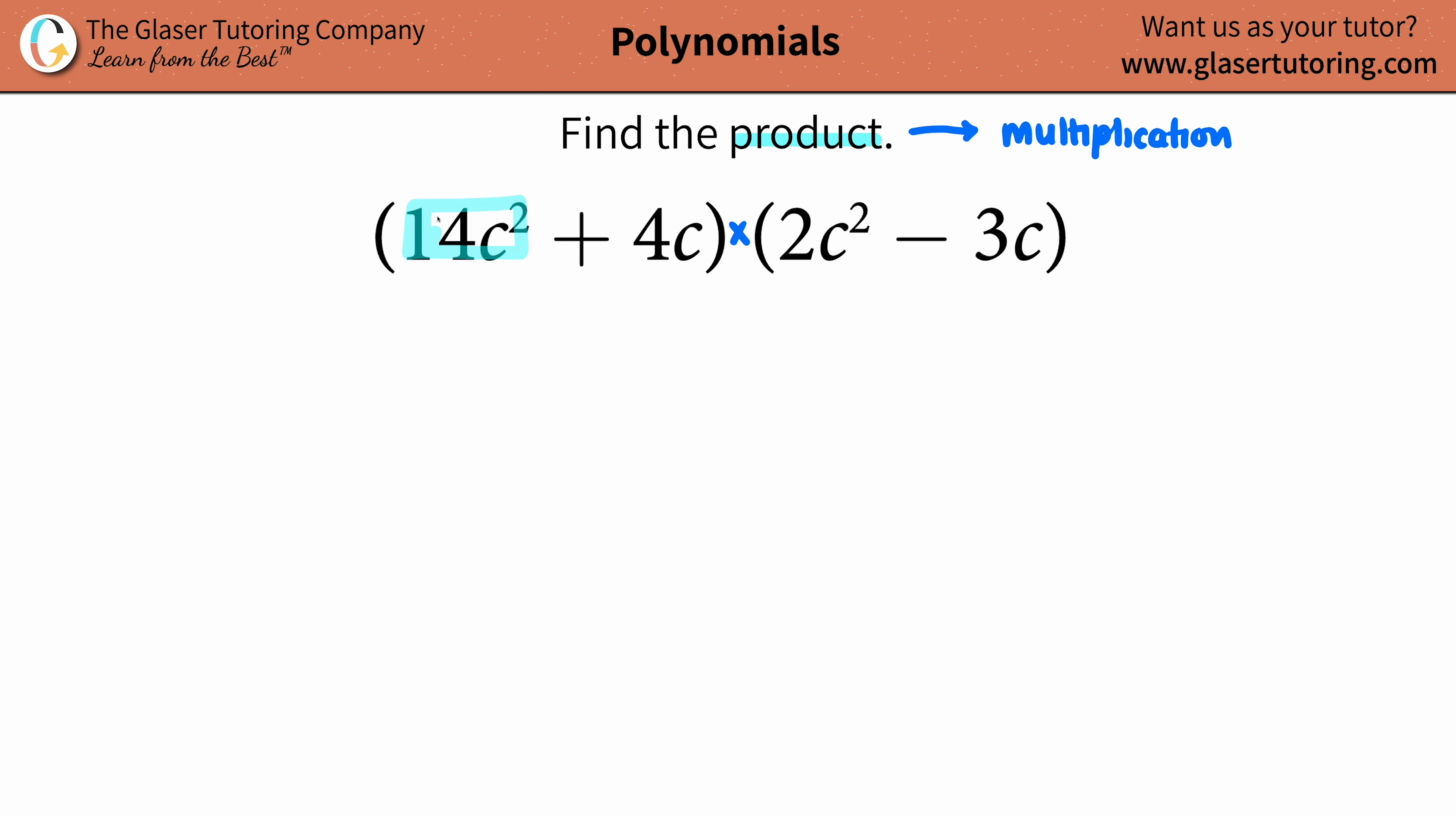Here we go with the fairness idea. Because we're multiplying, we want to multiply 14c² by this other parentheses. We don't want to multiply it by the 4c because inside the parentheses it says addition.